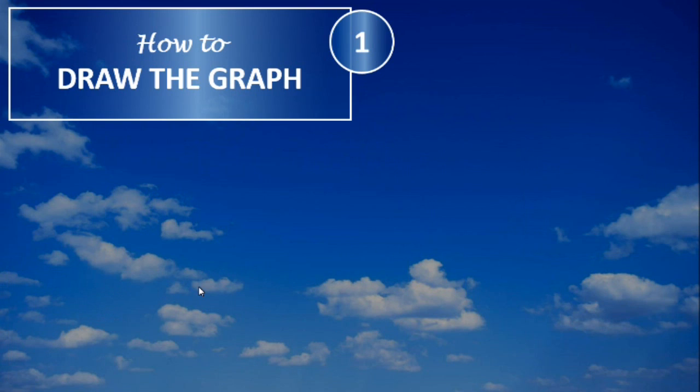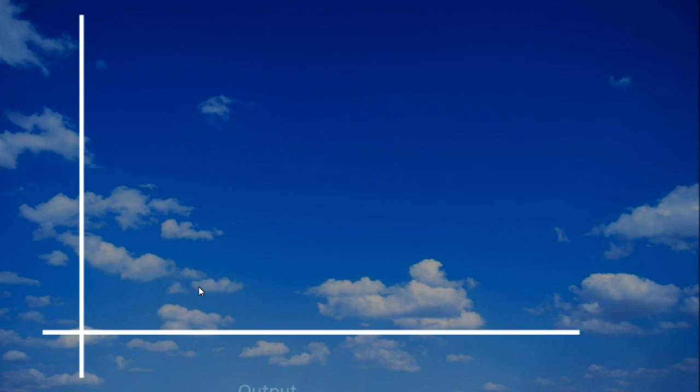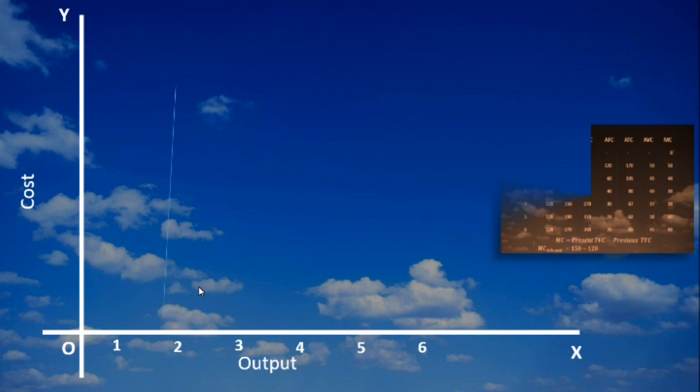Let us discuss the first one. Before drawing the graph, recollect what you have learnt about Average and Marginal Costs and their movement in relation to the output. What is more important is that it is Marginal Cost which reaches minimum first. It is followed by Average Variable Cost and Average Total Cost.